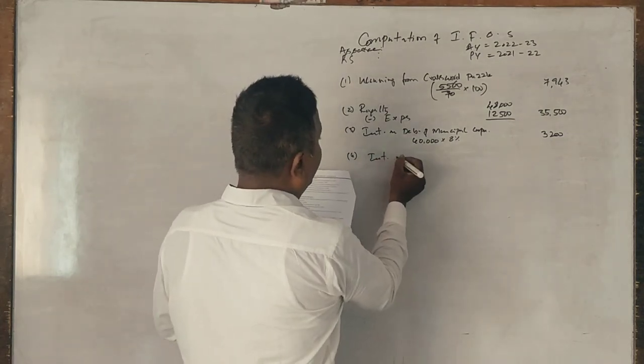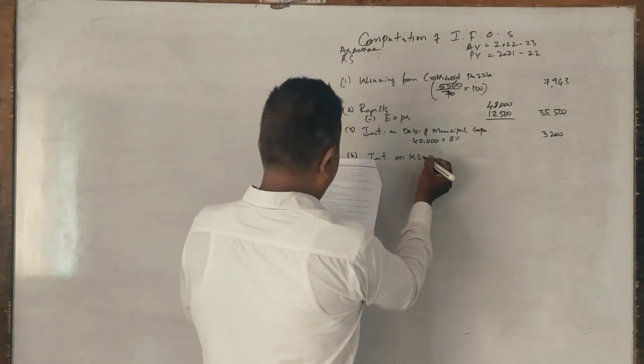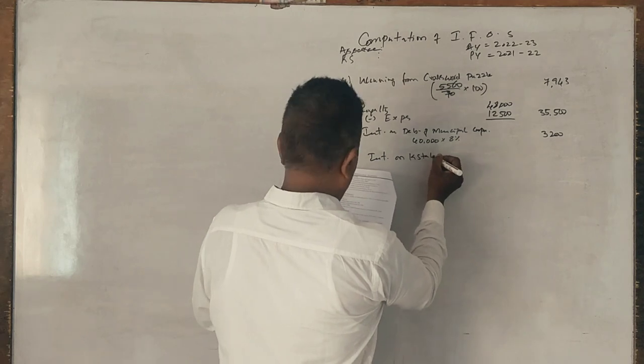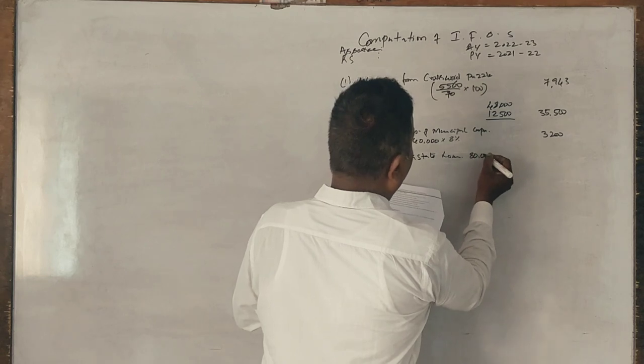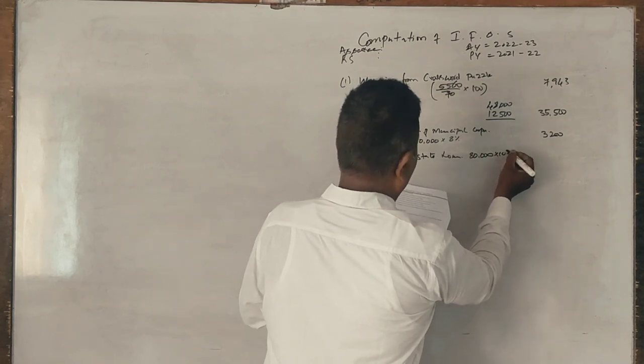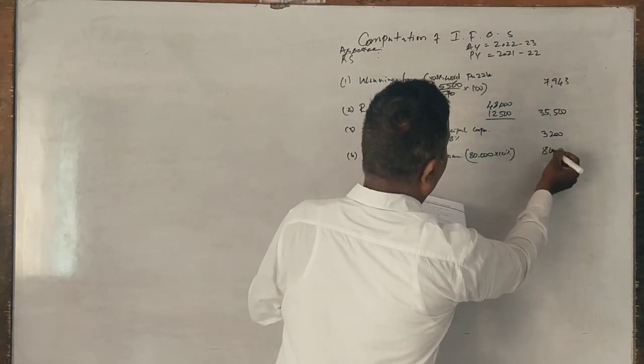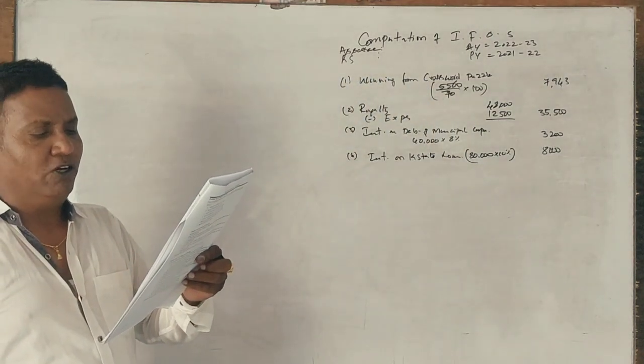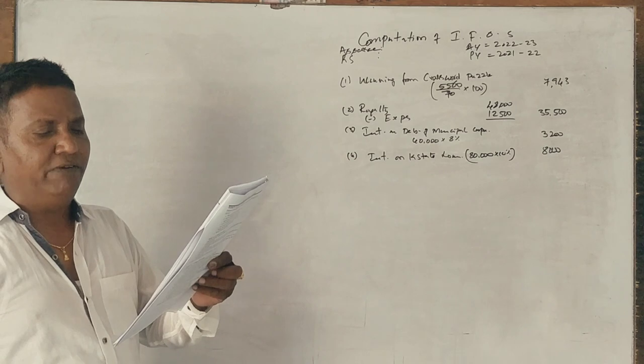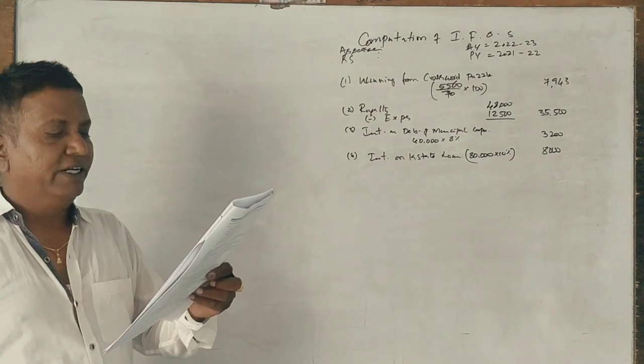Less tax government. Interest on Karnataka State loan: 80,000 into 10% equals 8,000. Next, he has invested 80,000 in 7% capital investment bonds of government, received interest for the year.